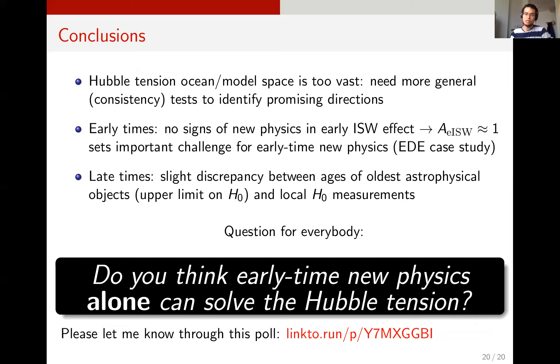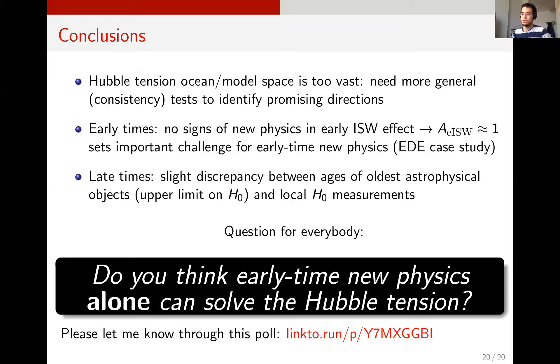Overall, this paints a very interesting picture for the Hubble tension, where it's clear that early time new physics alone, in my opinion, cannot solve the tension. I would like to ask you: do you think that early time new physics alone can solve the Hubble tension? I would love to hear your thoughts in the poll I've linked. With that, I'm finished, and I would like to thank the organizers for accepting my talk. I look forward to the conference and to the discussion session.